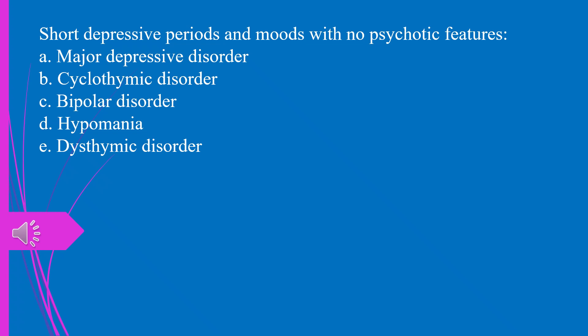Question 49. Short depressive periods and moods with no psychotic features: a) major depressive disorder, b) cyclothymic disorder, c) bipolar disorder, d) hypomania, e) dysthymic disorder. The answer is e, dysthymic disorder.